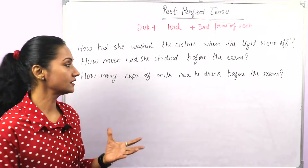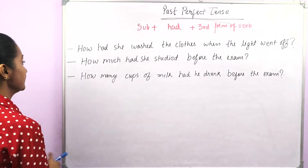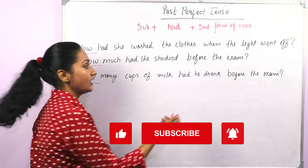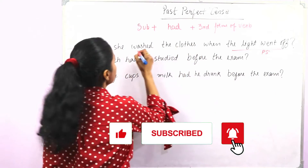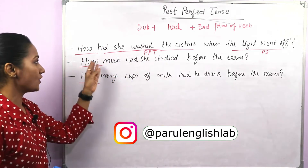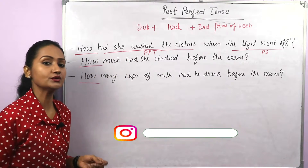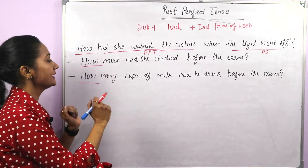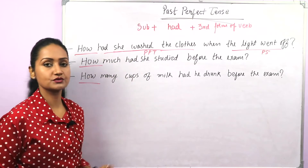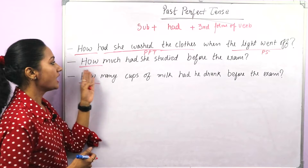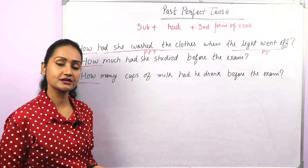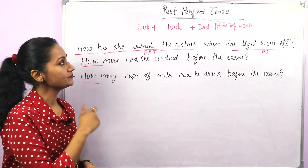Here we have some questions starting with a question word. 'How had she washed the clothes when the light went off?' — 'when the light went off' is past simple, and 'how had she washed the clothes' is past perfect. The structure is: question word + 'had' + subject + third form of the verb. 'How much had she studied before the exam?' 'How many cups of milk had he drunk before the exam?' — that's how you can use question words in past perfect tense.